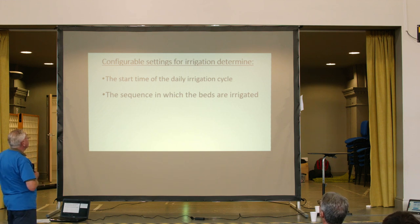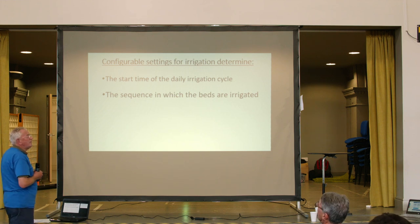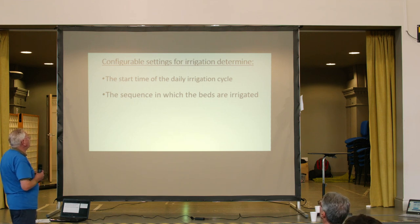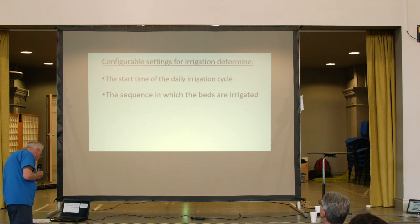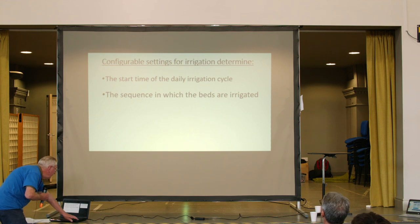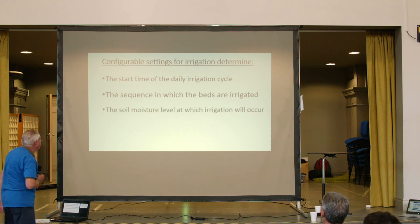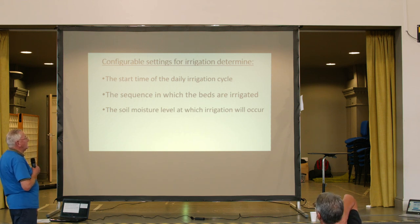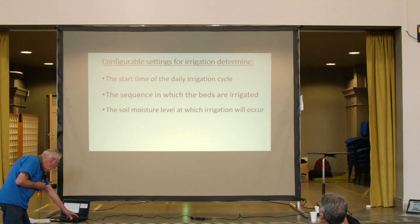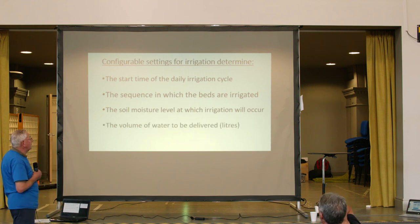For irrigation configuration, there's an irrigation cycle that takes place once a day. You can configure the start time — I have it set for late evening. You can configure the sequence in which the beds are irrigated, the soil moisture level of the bed as to whether irrigation will occur for that particular bed or not, and the volume of water delivered to any particular bed.